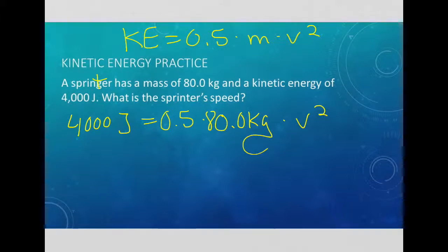And I know I'm going to have to square root because of our velocity over here, but I need to get it on its own before I square root that. So I'm going to divide both sides by the 0.5 and by the 80. So I have 4,000 then, divided by 0.5 and then divided by 80. That equals 100. On that side equals V squared.